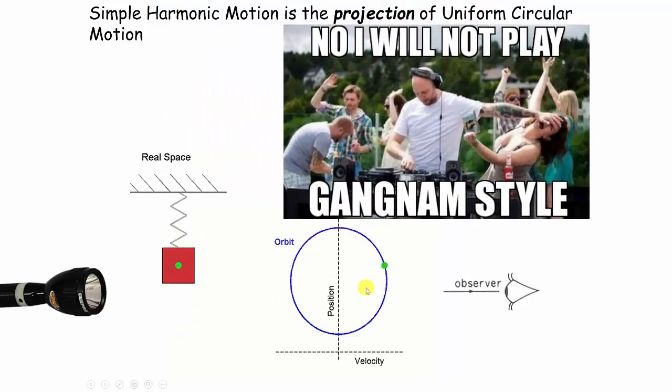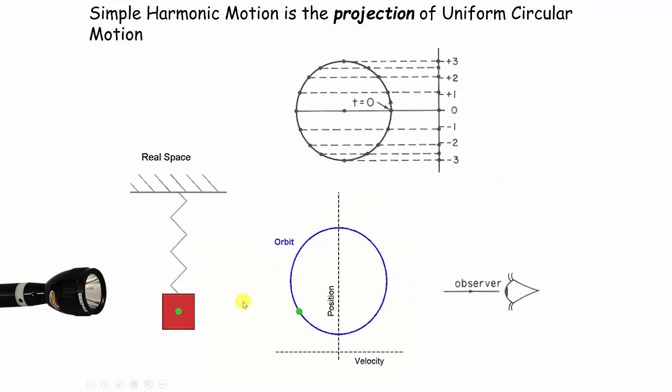The green dot here and the green dot here are always together. They never get out of phase at all. This is observably the case. It's a coincidence, but it's observably the case, so we can use that to steal the circular motion equations and use them for simple harmonic motion.